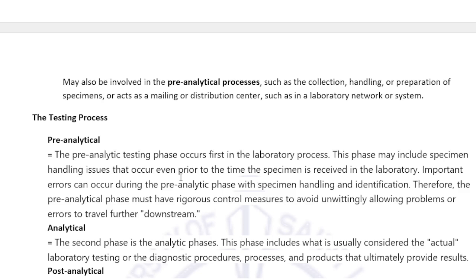Important errors can occur during the pre-analytical phase with specimen handling and identification — for example, mislabeling when two patients share the same name, like two patients named Abigail who are siblings, or two patients named Mrs. Reyes who are a married couple. Therefore, the pre-analytical phase must have rigorous control measures to avoid allowing problems or errors to travel further downstream.